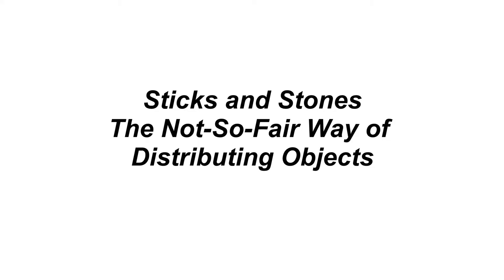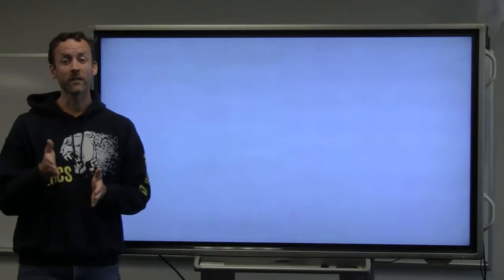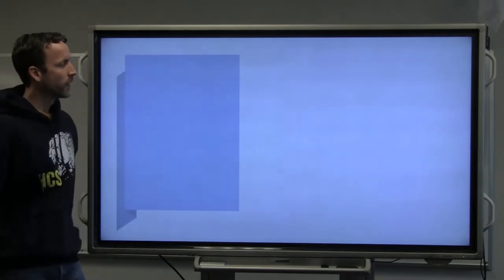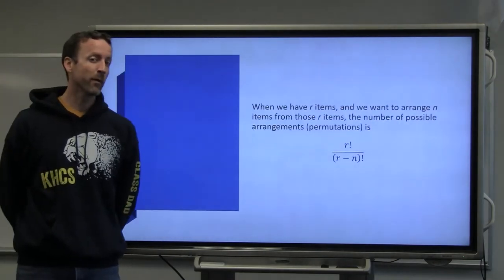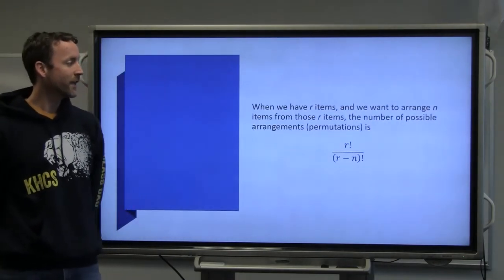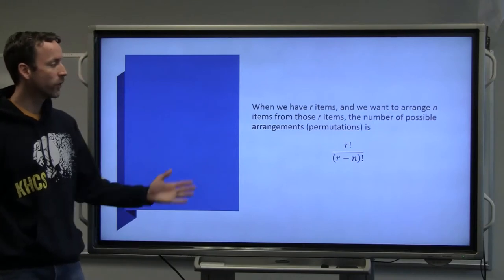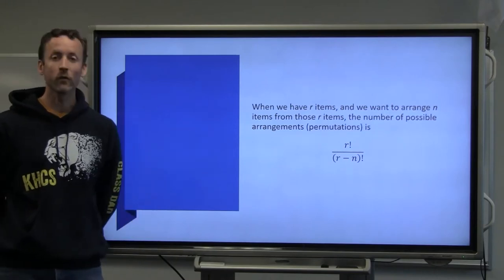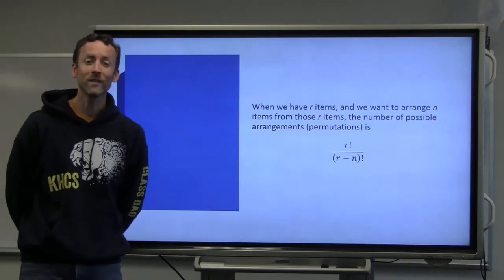Now, in order to be able to find how many ways there are to hand out six pieces of candy to the three of you, we have to establish some foundational material about counting first. For example, if I have r number of items, and I want to use n items from those r items, I would use the following formula for the number of arrangements, which are called permutations.